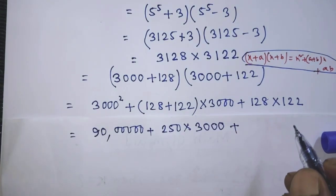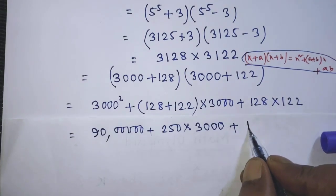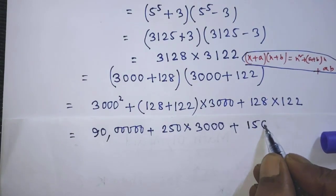If you multiply these both numbers, then you get 15,616.